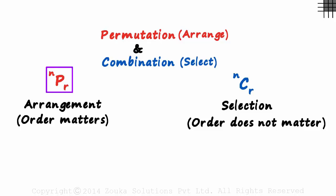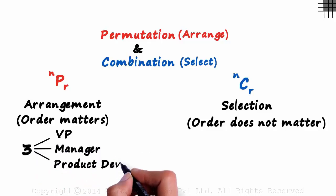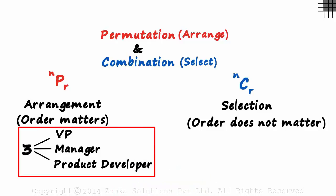Let me give you a permutation example. Assume we have to pick a team of three people out of the available 10. One of them will be chosen as a Vice President, another as a Manager and another as a Product Developer. This is a classic case of permutation. The order matters.